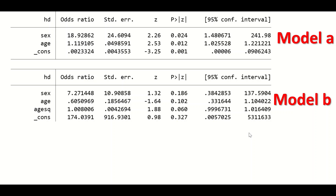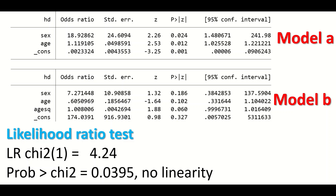With these two models, the likelihood ratio test is performed to compare them and find out whether the continuous age predictor fulfills the linearity assumption. This generates a p-value for the predictor age. The p-value was less than 0.05, which means we accept the alternative hypothesis — that there is no linearity between the continuous predictor and the outcome. Therefore, age cannot be included in the logistic model as it does not satisfy the assumptions for performing the regression analysis.